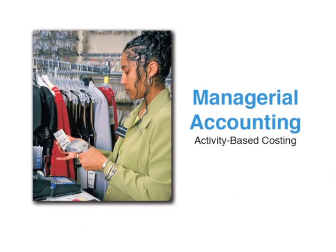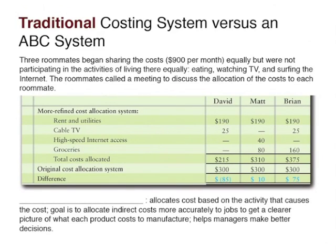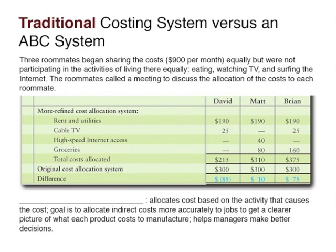This discussion is on the differences between simple or traditional based costing and an activity based costing system. We have three roommates — David, Matt, and Brian — and they're currently sharing all the cost of living together equally at $900 per month, but they're not all participating in the activities of living together equally, like eating, watching TV, and using the internet. Some are not using any of the activity but yet they're getting charged for those activities, so it's probably not a fair way to do this.